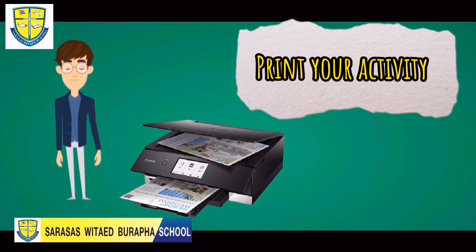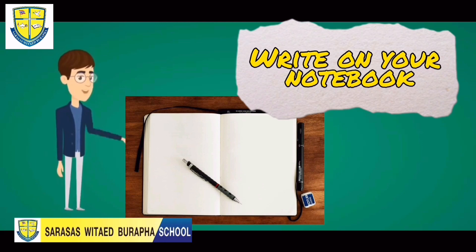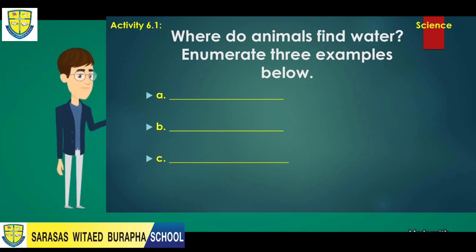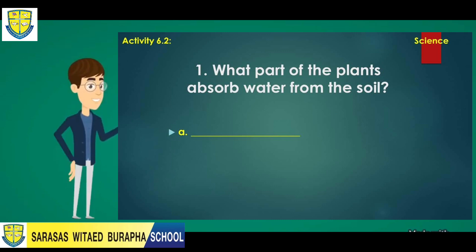Please don't forget to print your activity, or you can just write it in your notebook. Your first activity is: where do animals find water? Enumerate three examples below. Your second activity is identification: what part of the plant absorbs water from the soil?